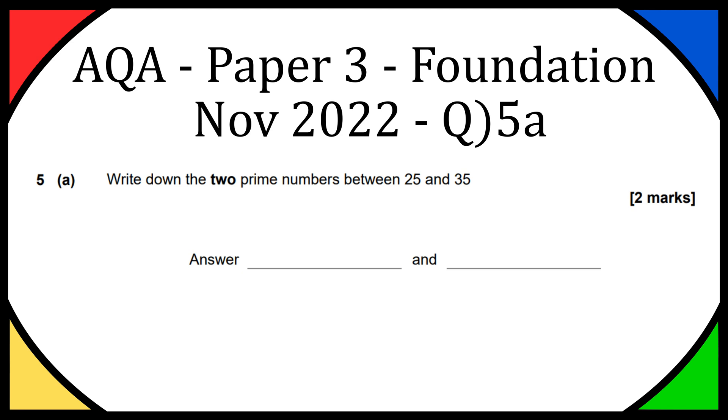Hey everyone, so today I'm going to go over question 5a and we have to write down two prime numbers between 25 and 35. Now it says the two prime numbers so I'm assuming there's going to be only two. It's a two mark question and we need to answer the two prime numbers.